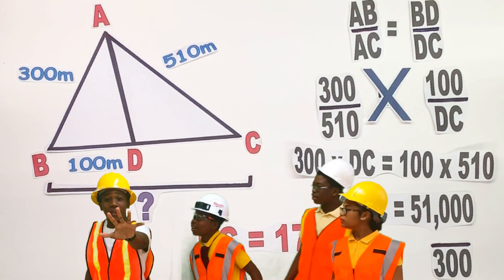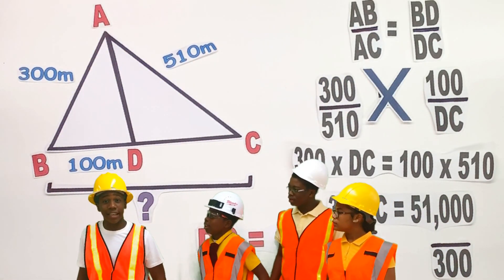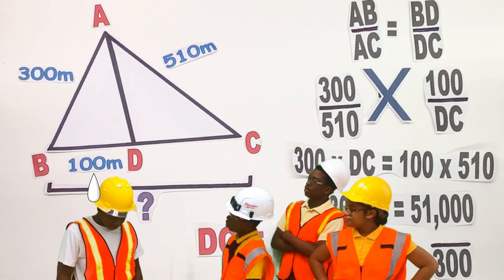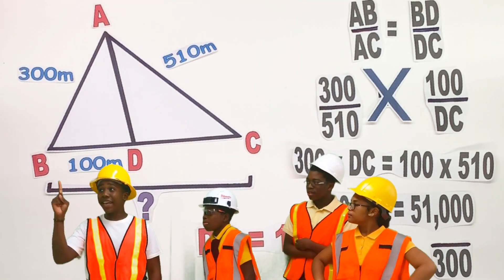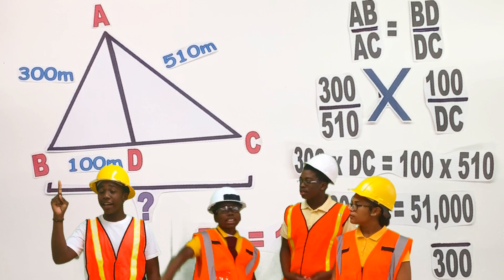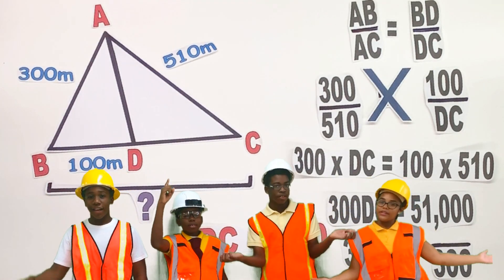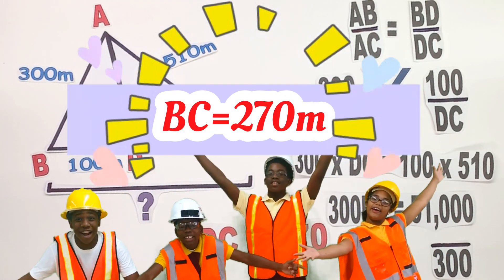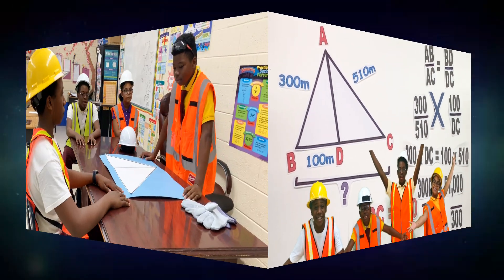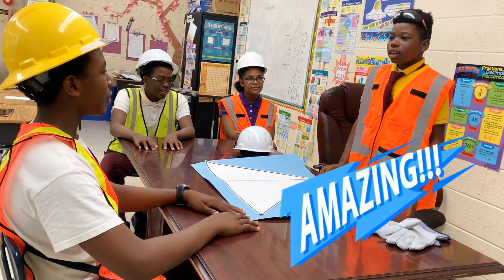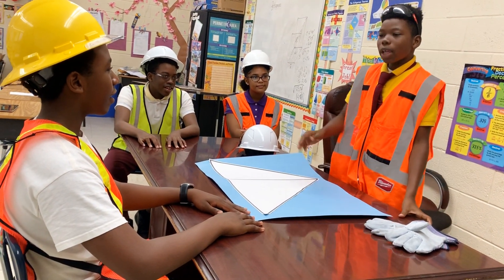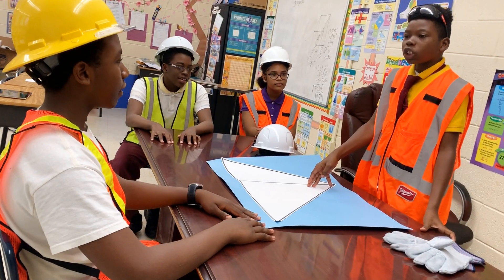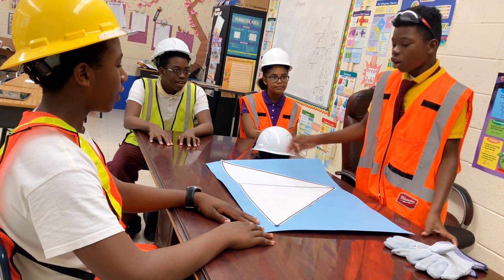But wait, we have to find side BC. Yeah, that was your side, Samantha. So side BD plus side DC is equal to 270 meters. Great job, engineers. Now that we have the complete measurements for the triangle lot, we can now plan the construction. Meeting adjourned.